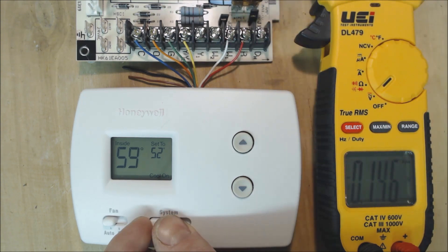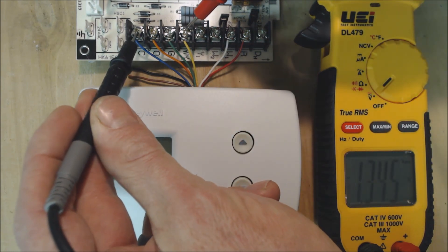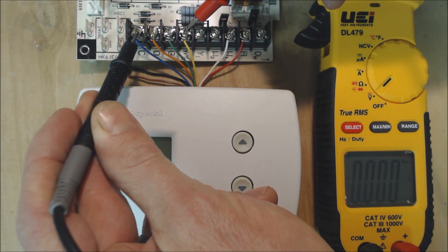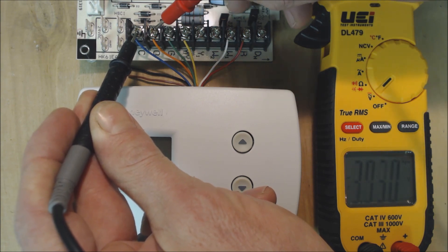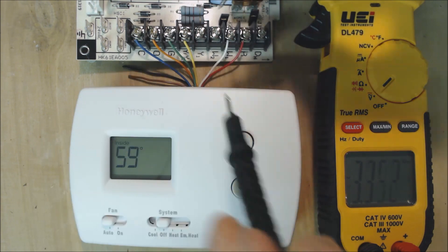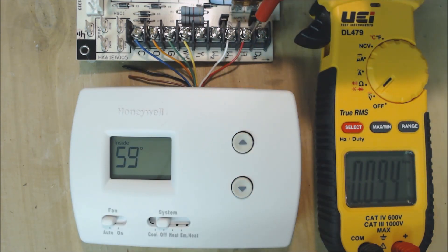Now let's turn this off. We no longer have 24 volt power between Y and common, G and common, or O and common. That was all happening because the thermostat was connecting all of those together with the R wire.